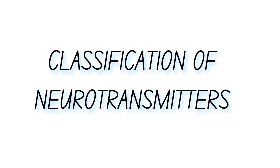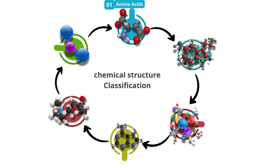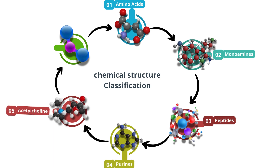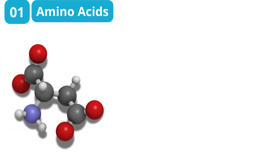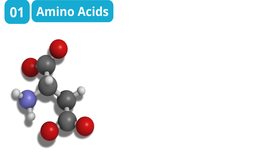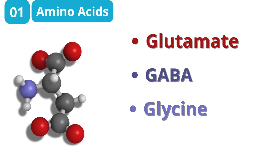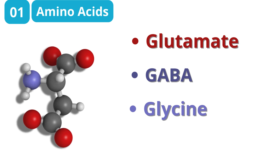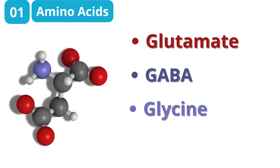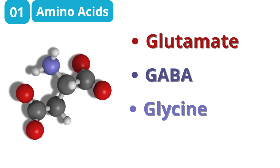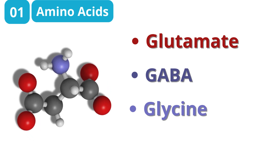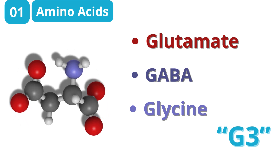Neurotransmitters can be classified based on their chemical structure into six major categories: amino acids, monoamines, peptides, purines, acetylcholine, and gasotransmitters. Amino acid neurotransmitters include glutamate, GABA, and glycine. These are essential for basic brain functions like learning, memory, and maintaining balance in neuronal activity. To remember amino acids, use 'G3' — glutamate, GABA, glycine — like the three pillars of brain function.